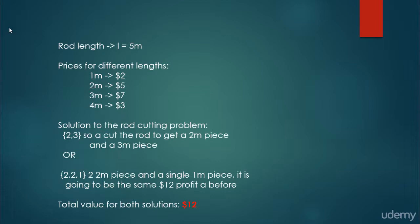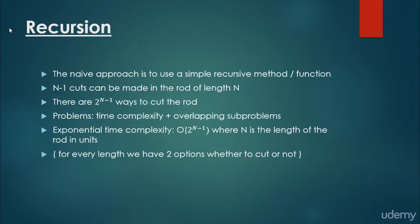We can solve this problem two ways. Recursion is the naive approach — we write a simple recursive function. N minus 1 cuts can be made in a rod of length N, so there are 2 to the power of N minus 1 ways to cut the rod. The two main problems are overlapping subproblems and exponential time complexity, where for every length we have two options: cut or not cut.